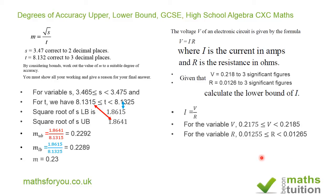So to find I_LB, we're going to divide the lower bound for V by the higher bound for R. So I_LB equals 0.2175 divided by 0.01265, and we end up with 17.193675. But we're working to 3 significant figures. That's our degree of accuracy. So our answer then becomes I_LB being 17.2 amps, and that's to 3 SF.